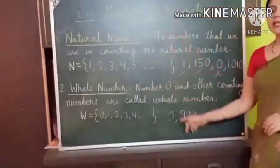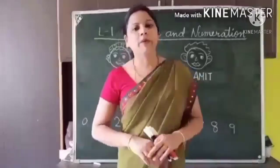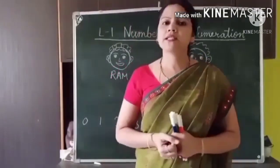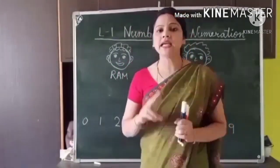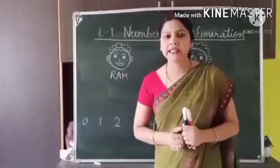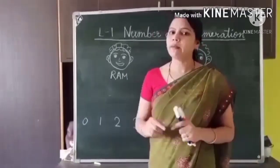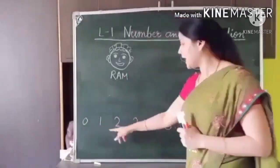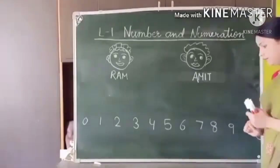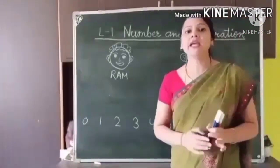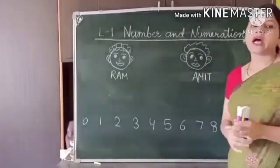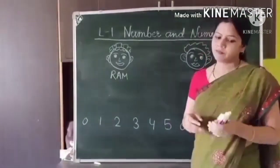You can pause this video and note these things in your notebook. Before starting the next two terms — even number and odd number — let's do an activity. For this activity, I need two boys: Ram and Amit. I need one-digit whole numbers, that is 0 to 9. And I have taken 9 sketch pens.